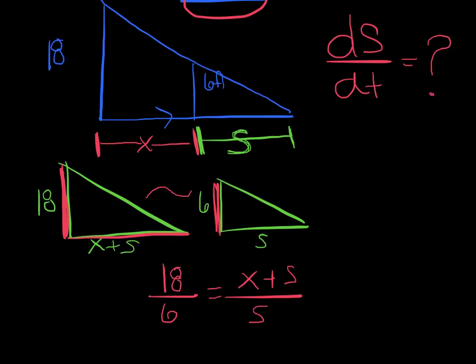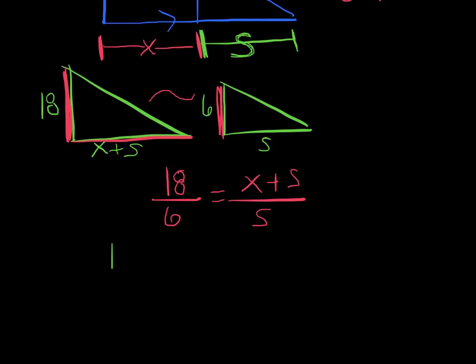Now certainly at this point in the game, if you want to take the derivative from here, you're more than welcome to. However, since I'm looking for ds/dt, I'm actually going to solve this equation for s. I think that would make the most sense. And then I could avoid quotient rule here. So all I'm simply going to do is a nice cross multiply. So I'm going to get 18s equals 6x plus 6s. And like I said, I'm going to solve for s. So I've got s equals 1/2 x.